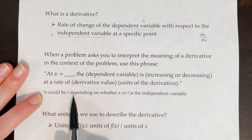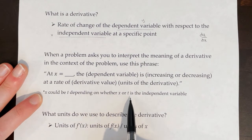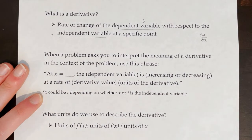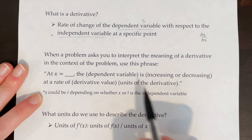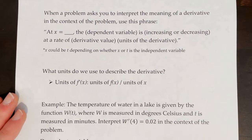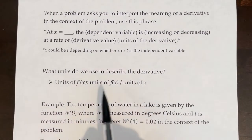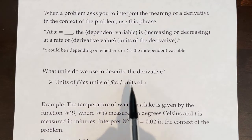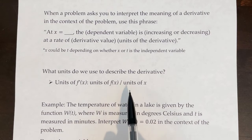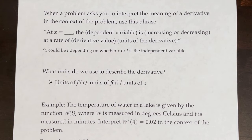Note that x could also be t, depending on whether they give you x or t as the independent variable, so you might say at t is equal to something instead. When describing the units of the derivative, you always use units of f(x) over the units of x — the units of the dependent variable over the units of the independent variable. Some examples for units of the derivative could be degrees Celsius per hour, or people per minute, or something like that.